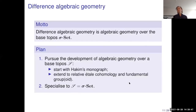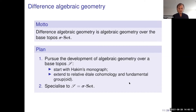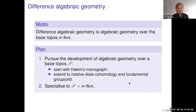Encouraged by this success of homological algebra, we want to continue and redevelop difference algebraic geometry in a similar way. We proclaim that difference algebraic geometry is going to be algebraic geometry — relative algebraic geometry — over the base topos of difference sets. The plan is: in phase one, pursue the development of algebraic geometry over an arbitrary base topos S, starting with Hakim's monograph and reformulating when necessary in terms of more contemporary topos theory.